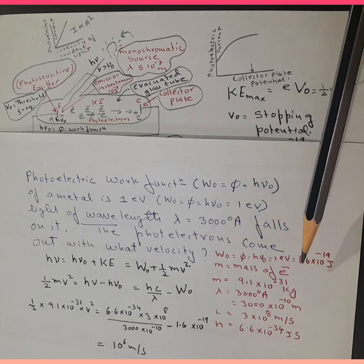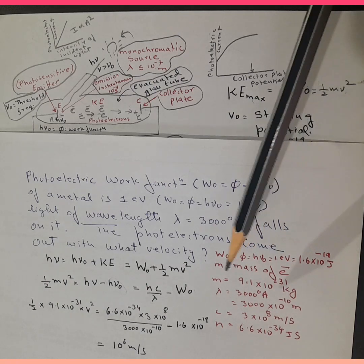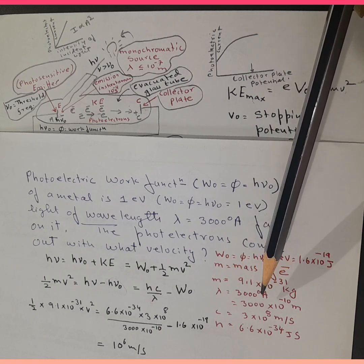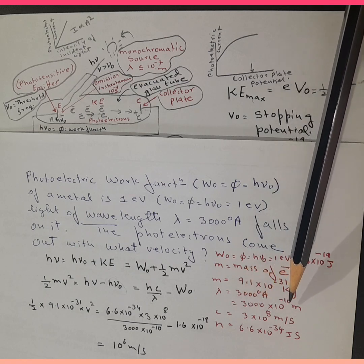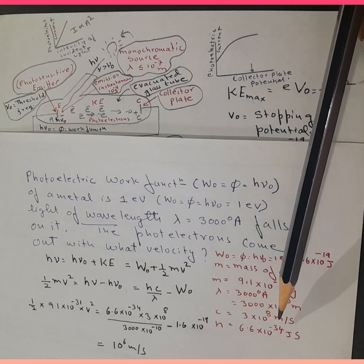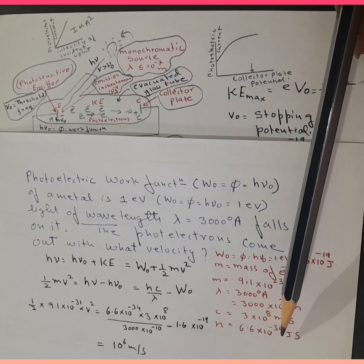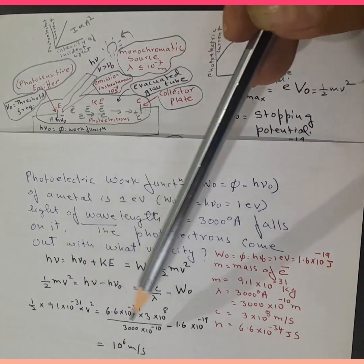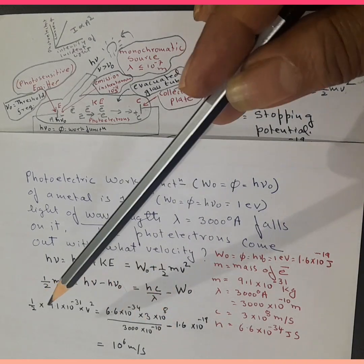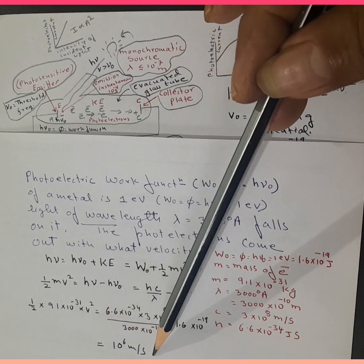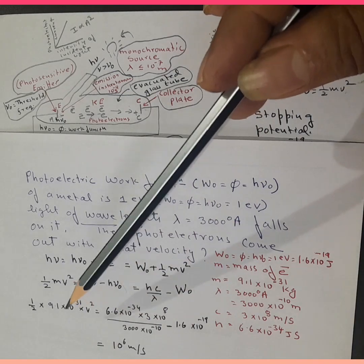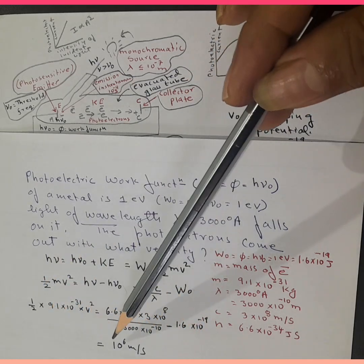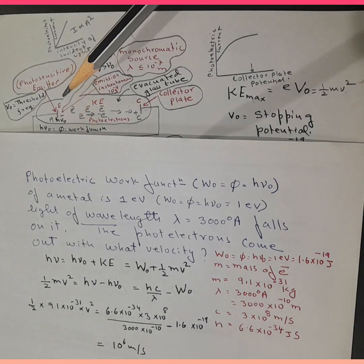Now we substitute: W-zero equals h-nu-zero equals 1 eV equals 1.6 × 10⁻¹⁹ joules. Mass of electron is 9.1 × 10⁻³¹ kg. Lambda is 3000 angstrom equals 3000 × 10⁻¹⁰ meters. Velocity of light c is 3 × 10⁸ m/s. Planck's constant h is 6.6 × 10⁻³⁴ joule-seconds. Substituting all values and solving, we get v squared, so taking the square root gives approximately 10⁶ meters per second.